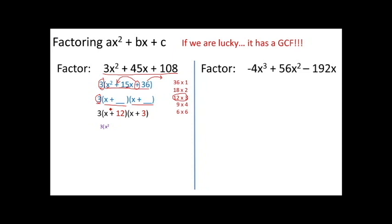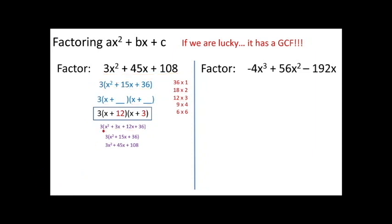Notice that the polynomial in the box is the correct answer. A lot of people get confused and think one of the intermediate steps might be the answer — but this factored form is the answer to the problem. Multiplying it back out — x times x, x times 3, 12 times x, 12 times 3 — the two middle terms combine and it simplifies back to the original, which just verifies that the work is correct.